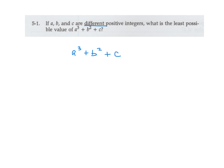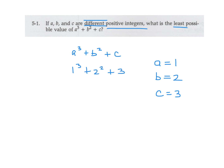So we want the least possible. Let's say A — we have to choose positive integers, so the smallest positive integer is 1, and I can't choose 1 for B because they're different, so I'll choose 2. And then for C, I'll choose 3. So we've got 1 to the power of 3, 2 to the power of 2, plus 3 — that's 1 plus 4 plus 3.